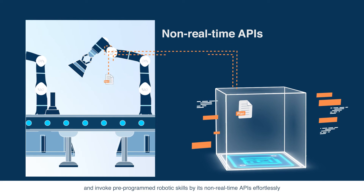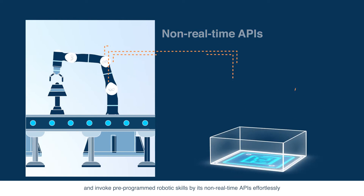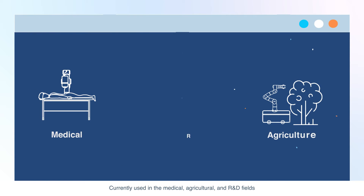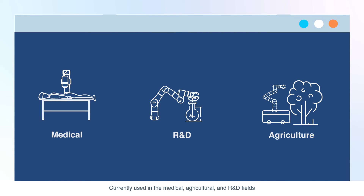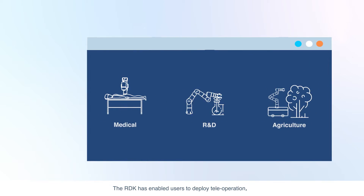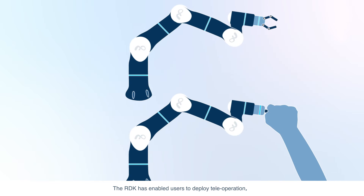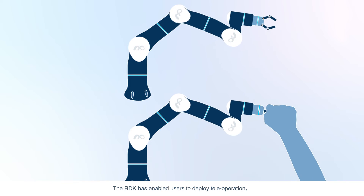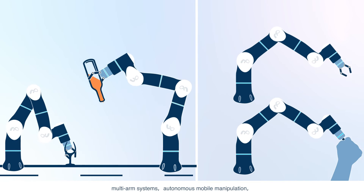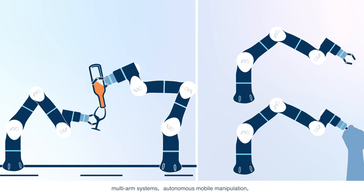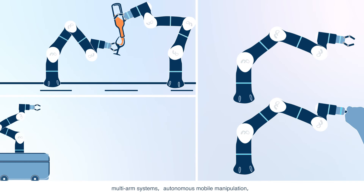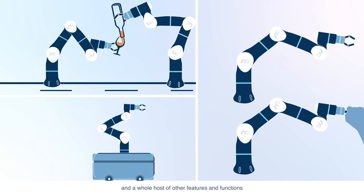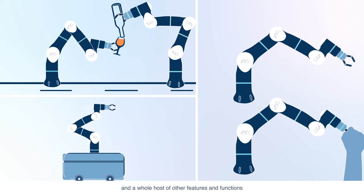Users can also execute high-level tasks and invoke pre-programmed robotic skills via its non-real-time APIs effortlessly. Currently used in the medical, agricultural, and R&D fields, the RDK has enabled users to deploy tele-operation, multi-arm systems, autonomous mobile manipulation, and a whole host of other features and functions.